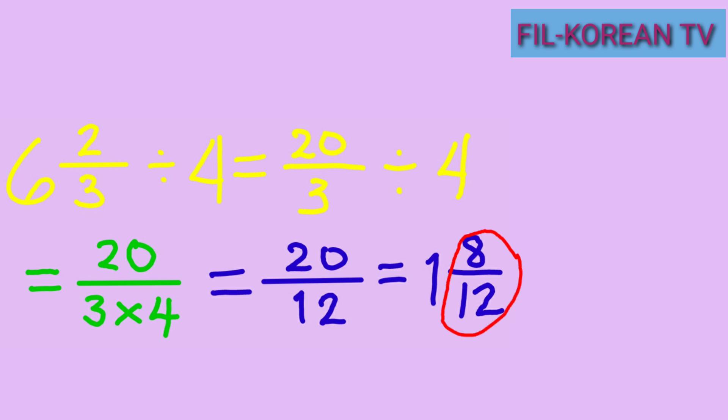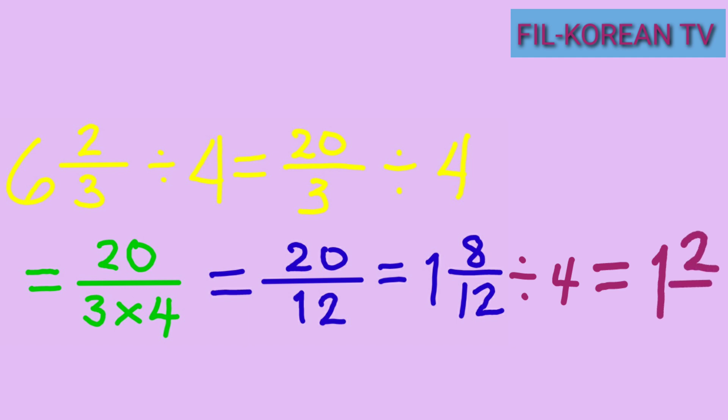8 and 12 have common factors, so we reduce to lowest term. We divide the numerator 8 and denominator 12 by their GCF. The GCF of 8 and 12 is 4. So 8 divided by 4 equals 2, and 12 divided by 4 equals 3. The final answer is 1 and 2 thirds.